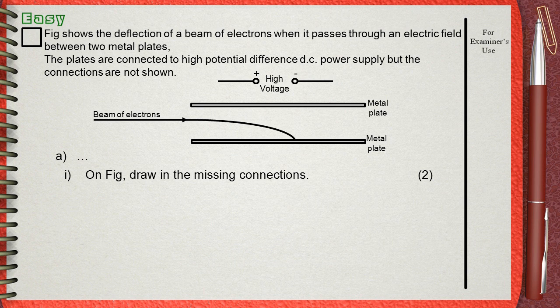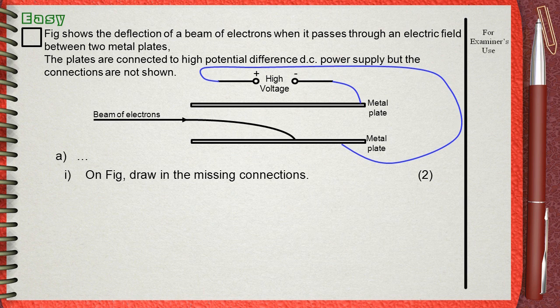The top plate and the beam of electrons have the same charge because they repel each other. The beam of electrons and the bottom plate have opposite charges because electrons are attracted to the bottom plate. So the top plate is connected to the negative terminal and the lower plate is connected to the positive terminal.